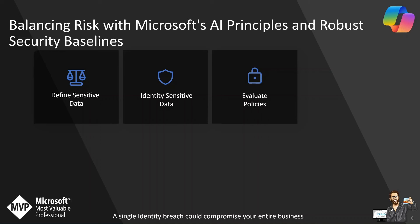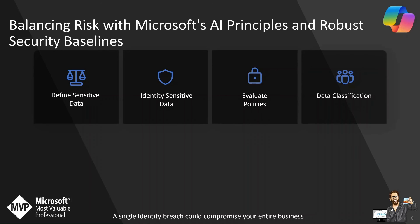By adopting a more conservative approach to file sharing settings, organizations can significantly reduce the risk of data exfiltration and ensure only authorized individuals have access to sensitive information. This not only protects the organization's data assets but reinforces its commitment to robust data security. Implementing these changes may require a cultural shift within the organization, emphasizing the importance of data security and educating users on potential risks.